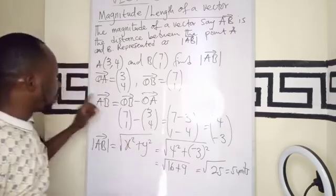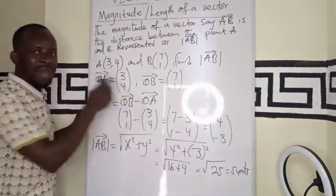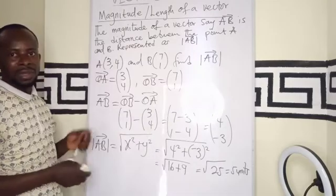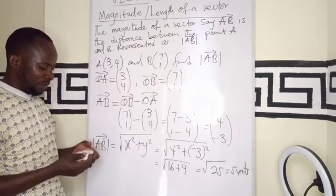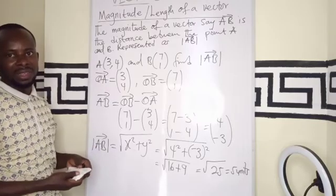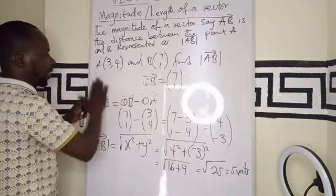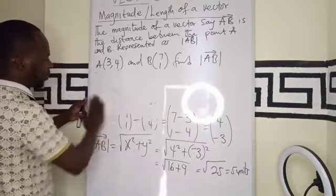If I want to find the position vector first, before finding the magnitude, this is what I will end up getting. But, what if I want to use the formula directly? That is the second formula that we have. Let's say, let me take off the position vector.